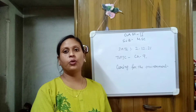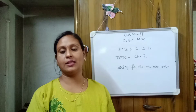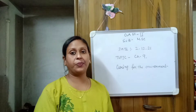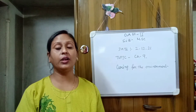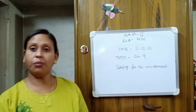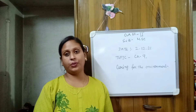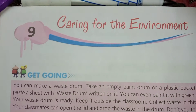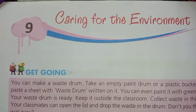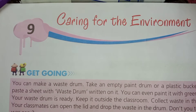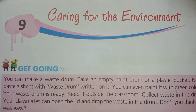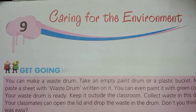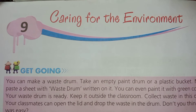Good morning, students of Class 2. You are all welcome in my model science class. Today's date is 2/12/21 and today our topic is Chapter 9: Caring for the Environment. This is a new chapter of your model science book. Children, do you know what environment means? Environment means the surrounding around us, or the surrounding we live in, or the favorable condition for living animals and plants.